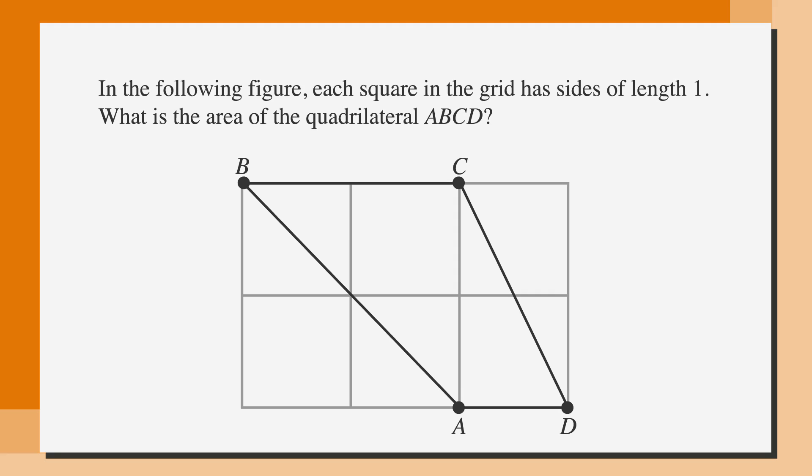In the following figure, each square in the grid has sides of length 1. What is the area of the quadrilateral ABCD? This is a grid in, so we aren't given any answer choices, which means we can't back-solve, but we do have all the information that we need to solve this problem.